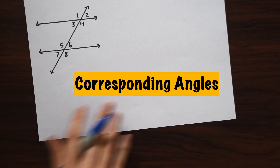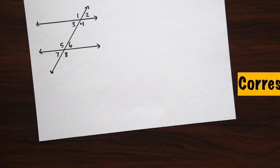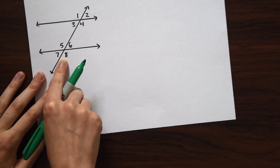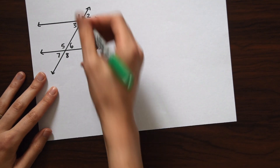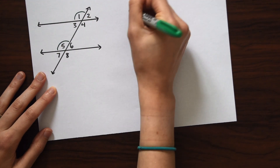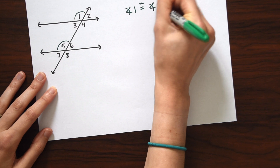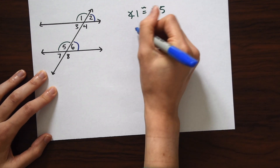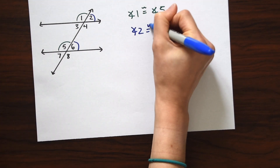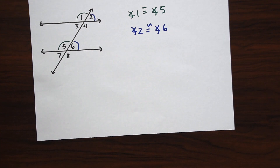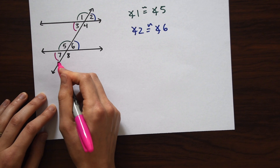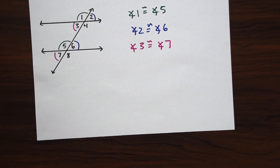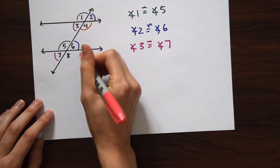Next we have corresponding angles, and there are a lot of them. The group 1, 2, 3, 4 looks like the group 5, 6, 7, 8 — that's basically what corresponding angles are. So angle 1 is congruent to angle 5, angle 2 is congruent to angle 6, angle 3 is congruent to angle 7, and our last set is angles 4 and 8.